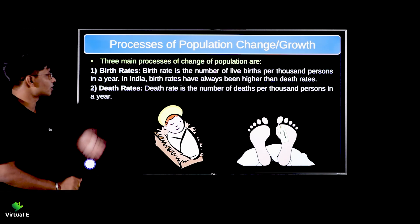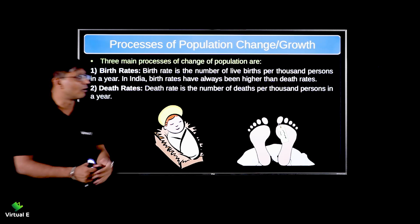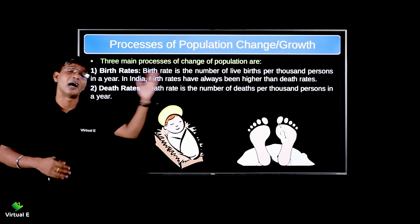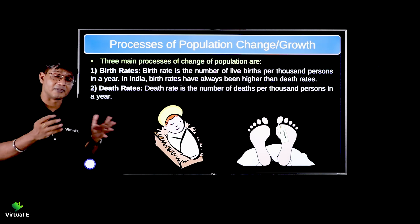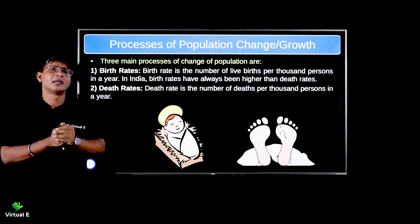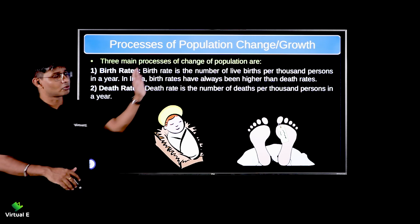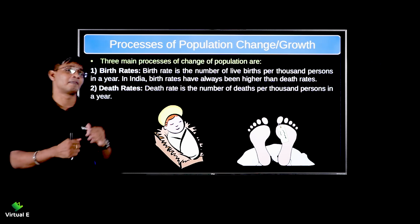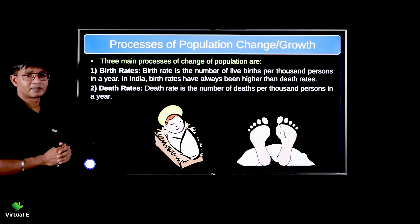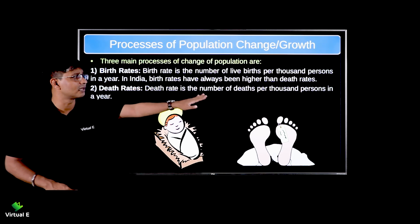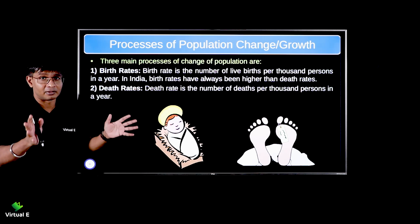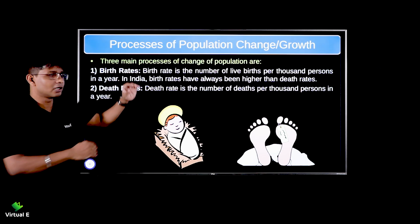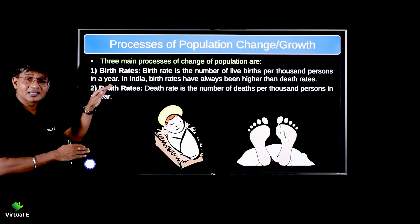Now let's see the factors that impact population change. First is birth rate — number of live births per thousand people in a year. India's birth rate has always been higher than its death rate, which reflects good medical facilities, healthy food, and a good environment. However, birth rate is so high that our population has grown considerably. Death rate is the number of deaths per thousand persons in a year. If more people are being born, population grows; if many die, it reduces or balances.